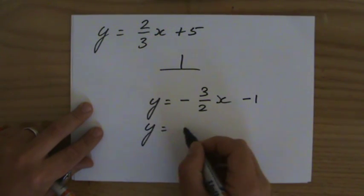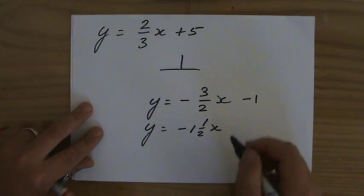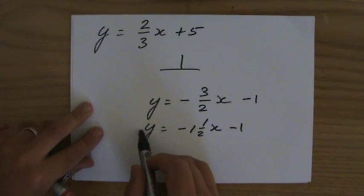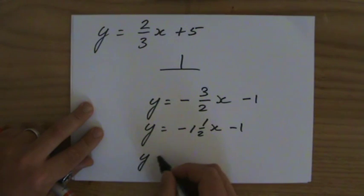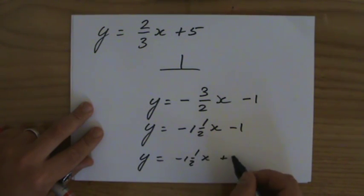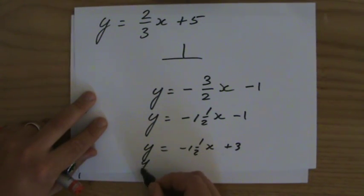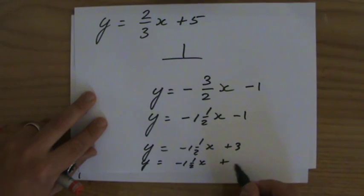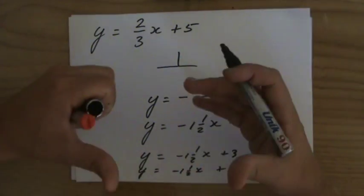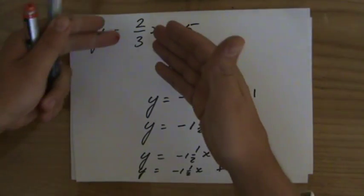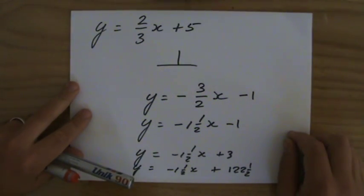Minus 1 and a half x minus 1 is perpendicular to that particular line. But also the line y equals minus 1 and a half x plus 3 is perpendicular to that particular line. But also the line y equals minus 1 and a half x plus 122 and a half is perpendicular to that line. Because it's the gradient where you have to look at. And it's the gradient which you take the negative reciprocal of, and then you'll have a perpendicular line.